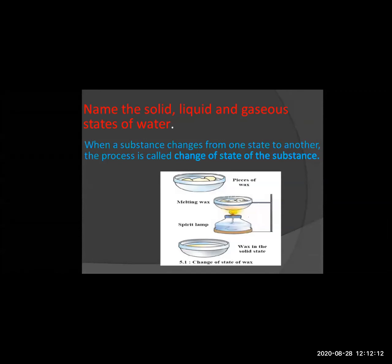Name the solid, liquid and gaseous states of water. What is the gaseous state of water? When water is boiling you can see the steam vapors. That is the evaporation of water, which is in the form of gaseous. Water is already a liquid. And when water is kept in the ice box in the refrigerator it takes the form of solid. So ice is a solid form of water.